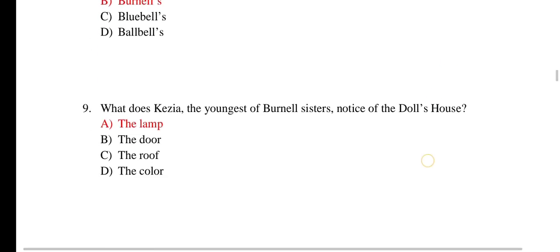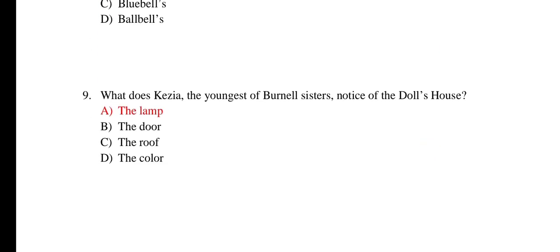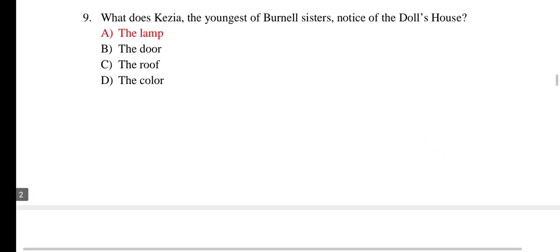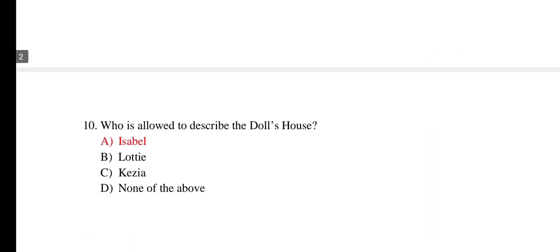The next question is: 'What does Kezia, the youngest of the Burnell sisters, notice about the Doll's House?' The correct answer is the lamp. The next question is: 'Who is allowed to describe the Doll's House?' The correct answer is Isabel.